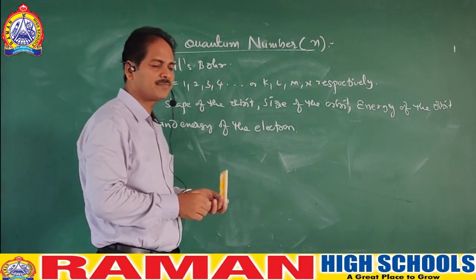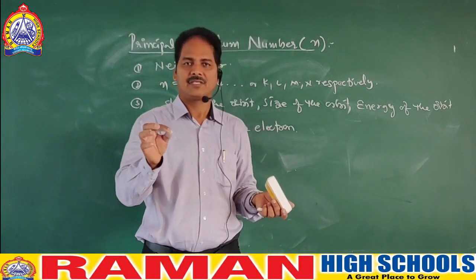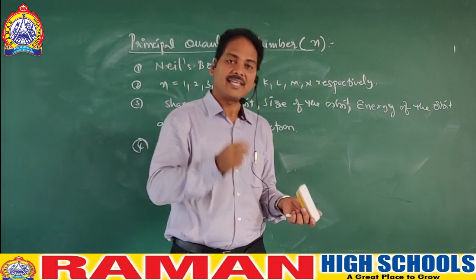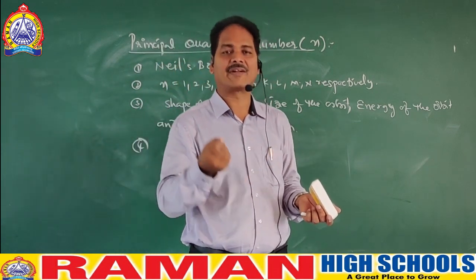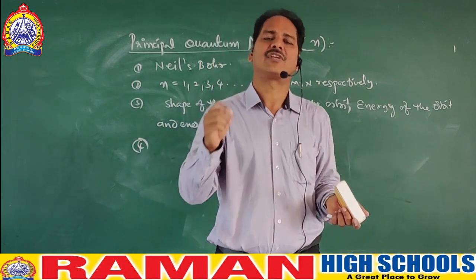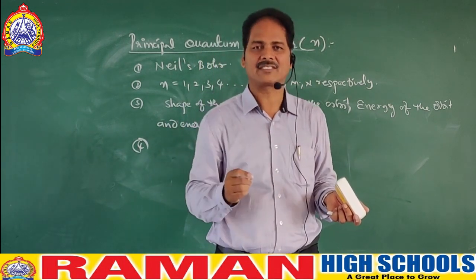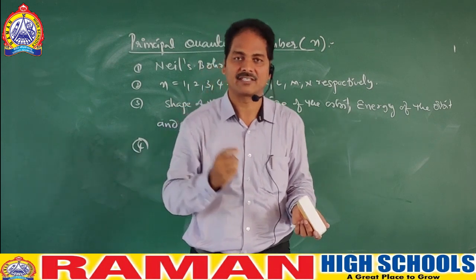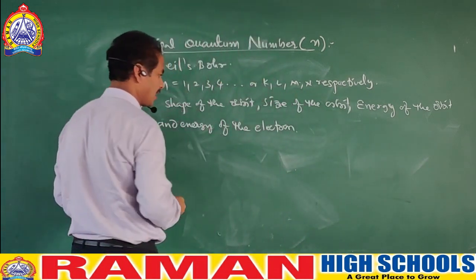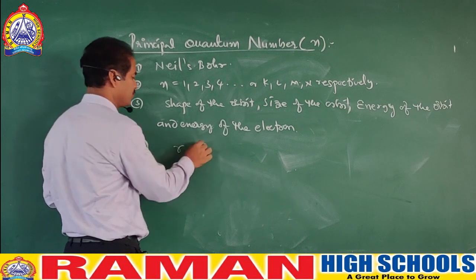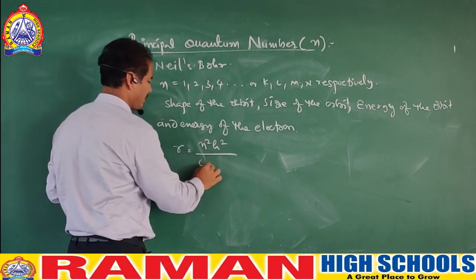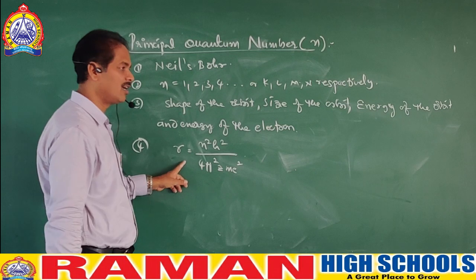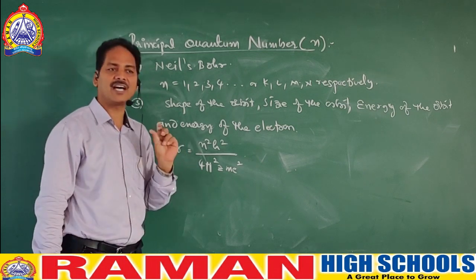Imagine, students — you can't see the atom; it's invisible. Only with a highly powerful microscope can we see the atom. Scientists have identified electrons around the nucleus and observed the orbits. The greatness of Niels Bohr is that he calculated the size of the orbit and gave a formula: R = N²H² / 4π²ZMe².